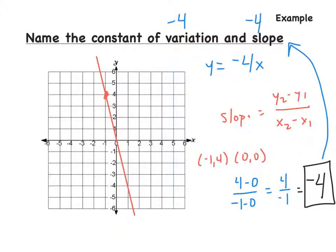Don't we realize that the constant of variation and the slope — aren't they the same thing? So that's a quick and easy way that you can check to see if the constant of variation and slope are the same.